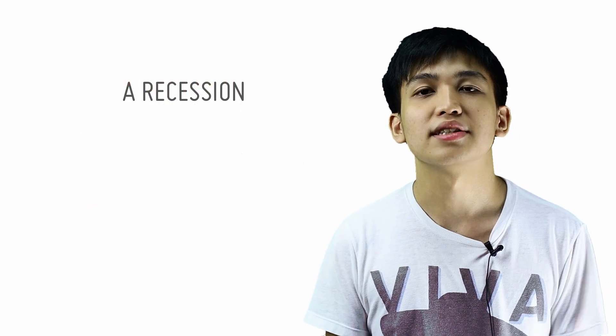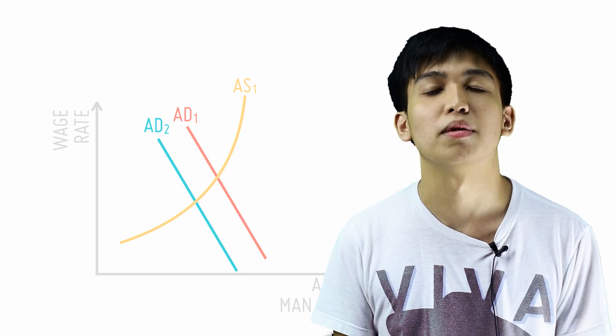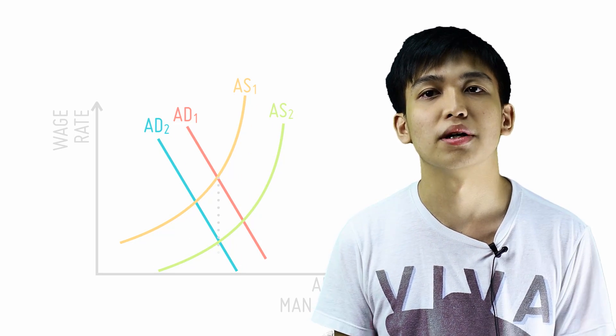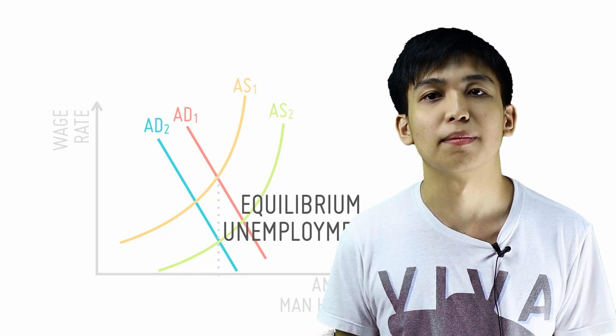An important reason why Keynes argued for government intervention during a recession is because of a sticky wage argument. According to classical economics, a recession is not really a problem, as wages will fall in line with a fall in the demand for labour. Any resulting unemployment is simply termed equilibrium unemployment.